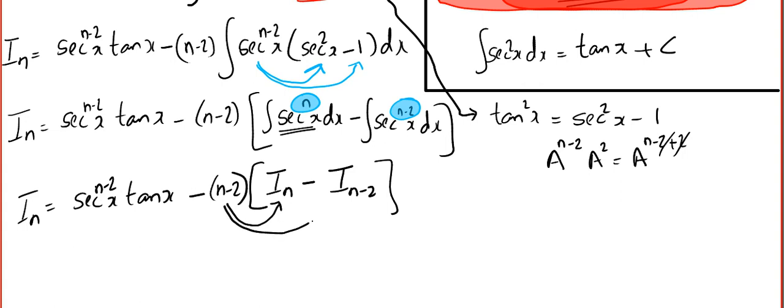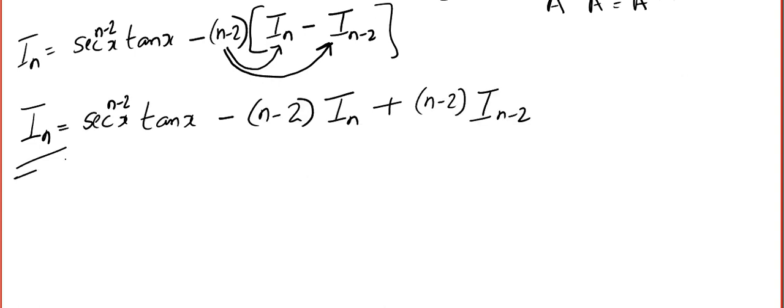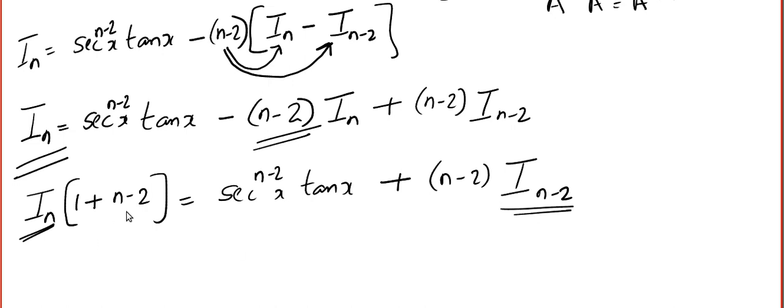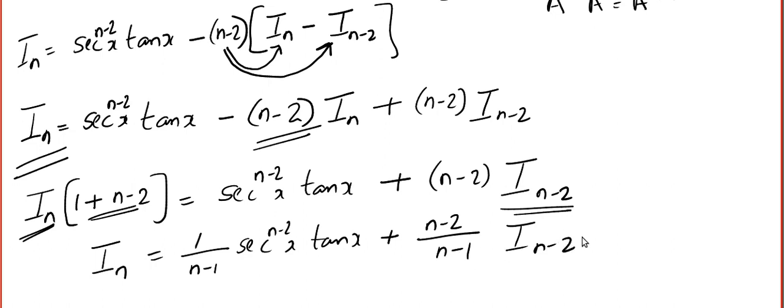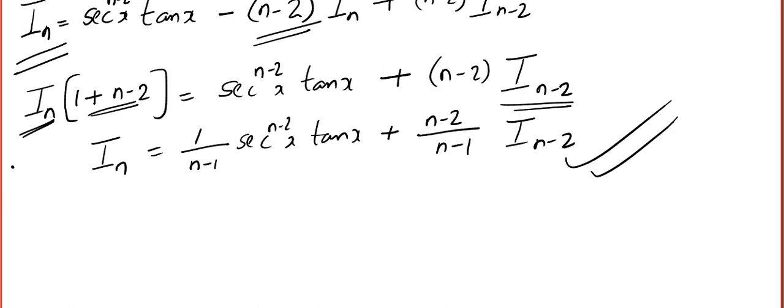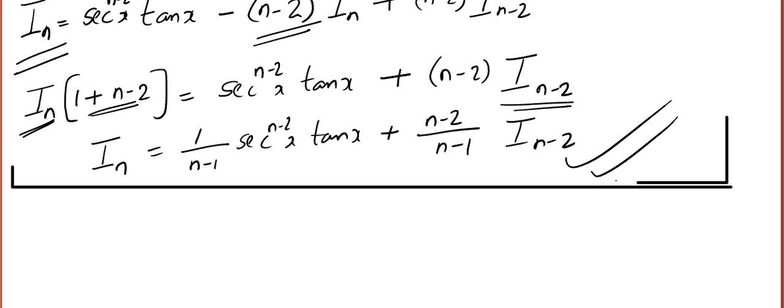So we get In is equal to sec to the power n minus 2 x tan x minus n minus 2 into this. Now let us open the bracket. In is equal to, now this, we have to take everything to this side. So I am going to skip that step because this will become In plus n minus 2 into In, In comes common. So we get something like this. We are almost near the end because I can express In in terms of In minus 2. Now what is this? So that is n minus 1 and I am going to divide throughout by n minus 1. So we get In is 1 by n minus 1 sec to the power n minus 2x tan x plus n minus 2 by n minus 1 In minus 2. I hope you are okay with this.